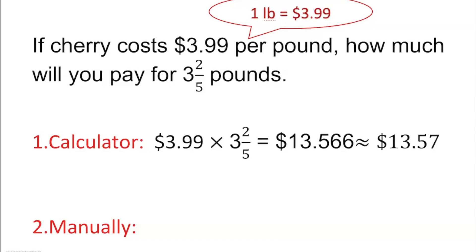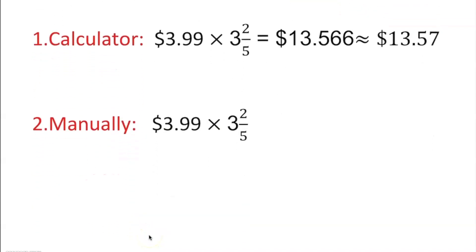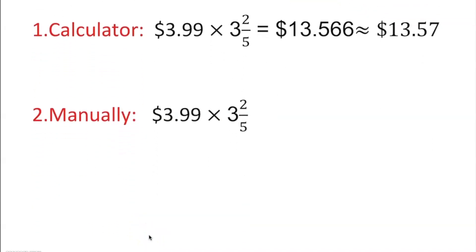Now, how do you do it manually? Manually, we are going to find a way to convert this into a decimal. 3 is a whole number, 2/5.